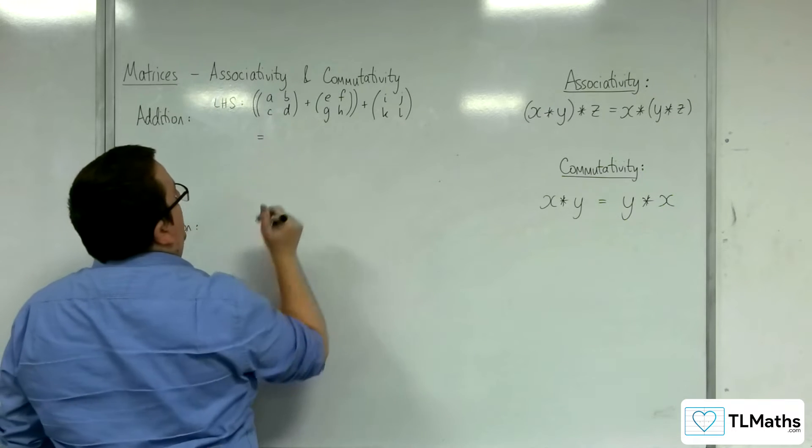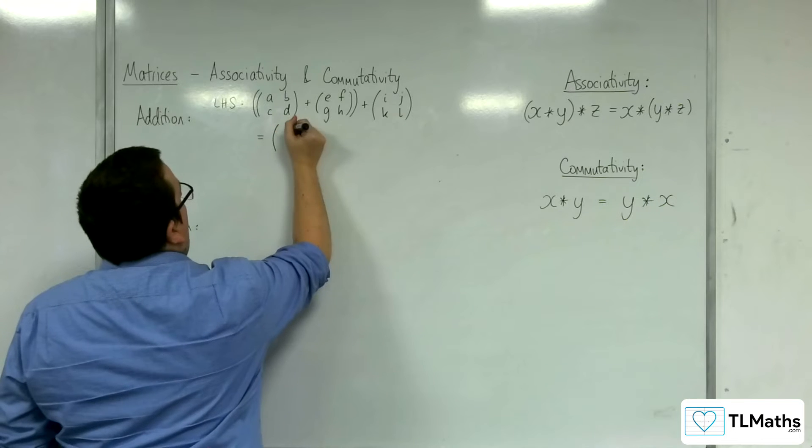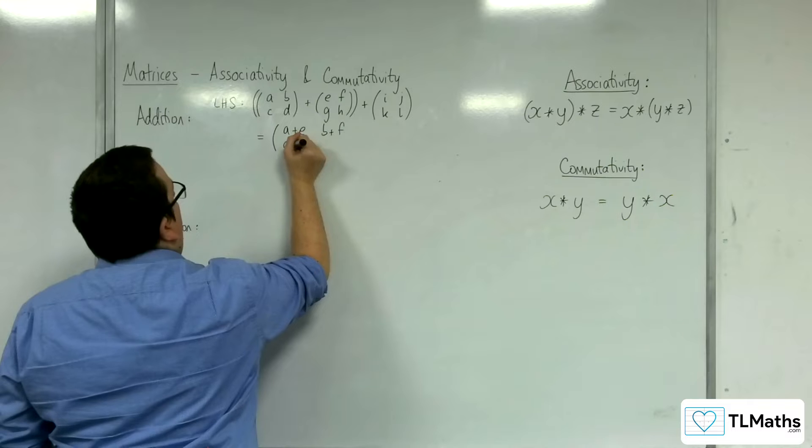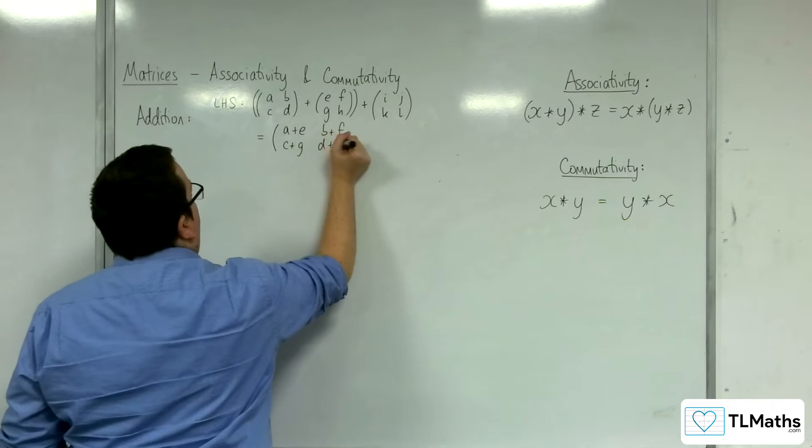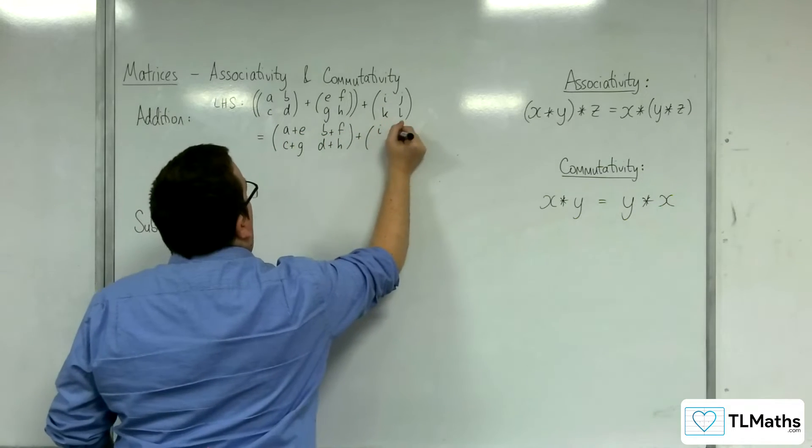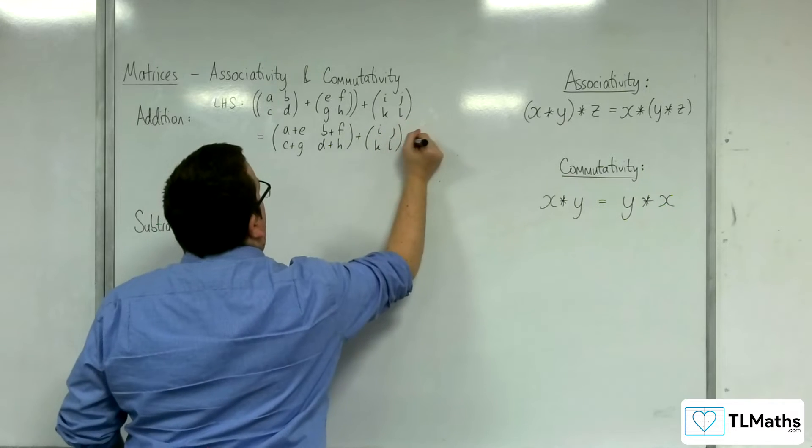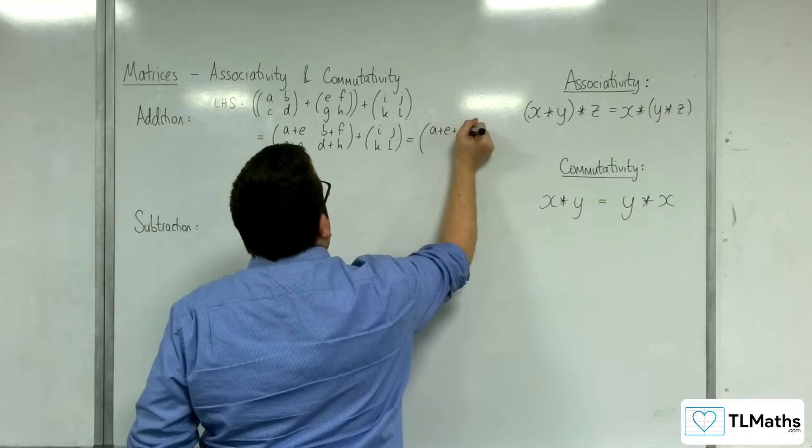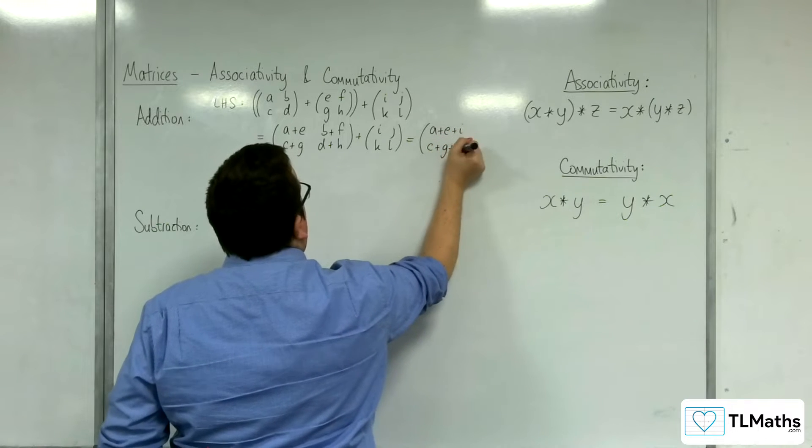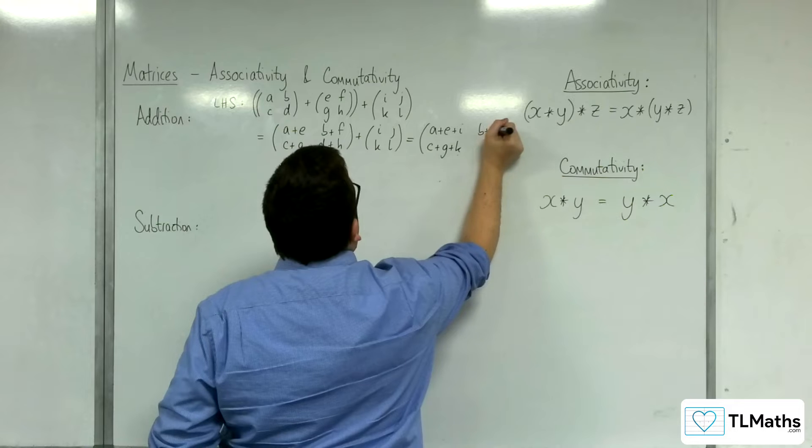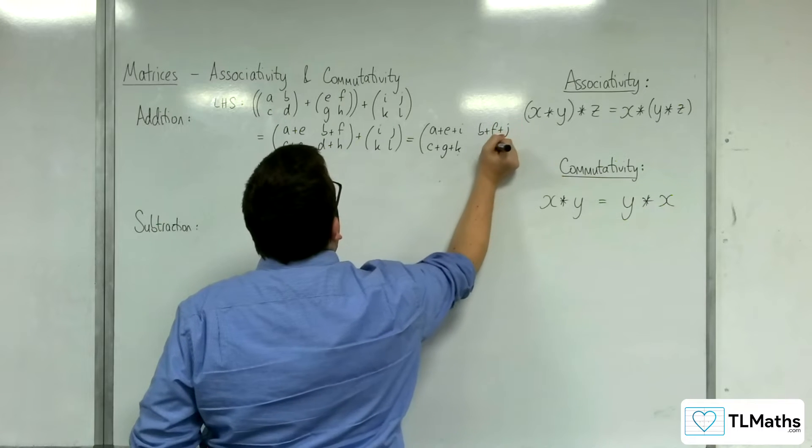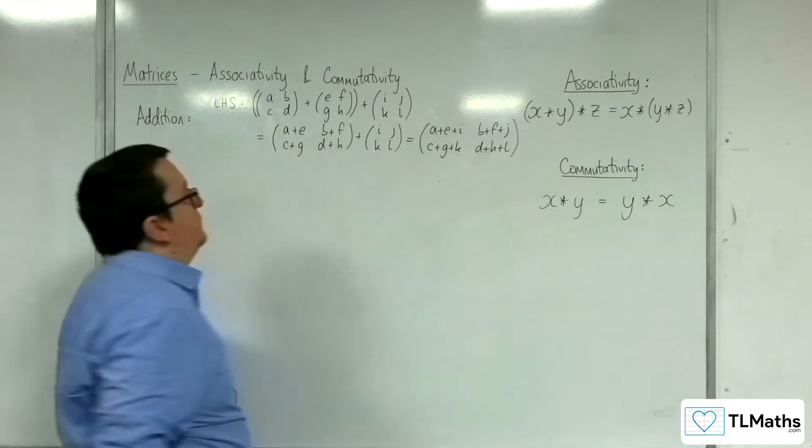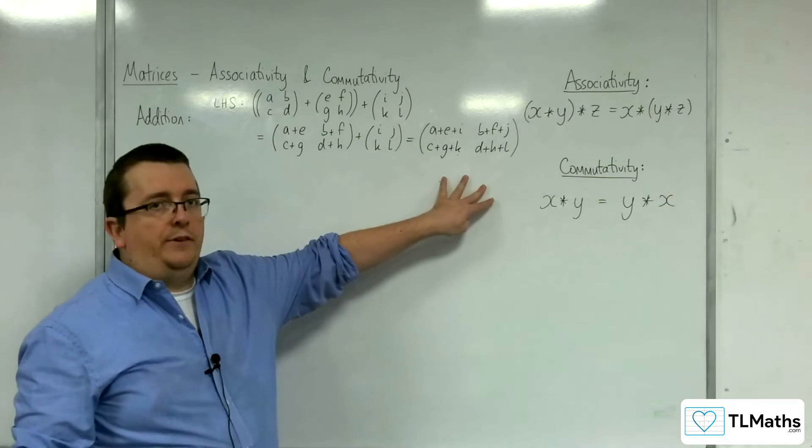If I add these two matrices together, we would have a+e, b+f, c+g, d+h. And then I'm going to add on the final matrix, and we would have a+e+i, c+g+k, b+f+j, and d+h+l. So that is the result for my left-hand side.